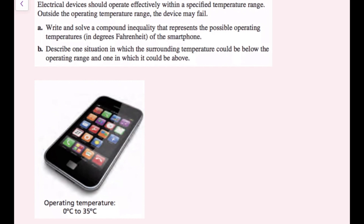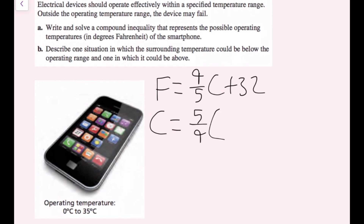Electrical devices should operate effectively within a specific temperature range; outside it, the device may fail. Write and solve a compound inequality representing the possible operating temperatures in degrees Fahrenheit of a smartphone. You could convert temperatures directly using F = (9/5)C + 32, but since it says write and solve a compound inequality, let's write one we can solve.